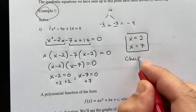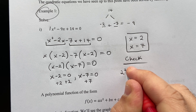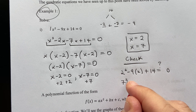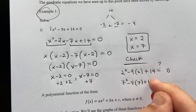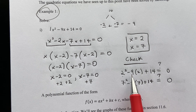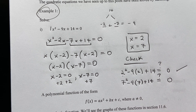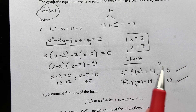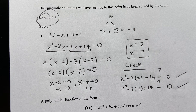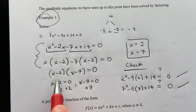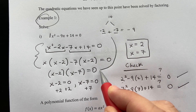We can check: 2 squared minus 9 times 2 plus 14 equals 0, and 7 squared minus 9 times 7 plus 14 equals 0. So 4 minus 18 plus 14 equals 0 — that works. Both solutions check out. Also, since a equals 1, I could have skipped the grouping steps and jumped straight to factoring once I knew the numbers.